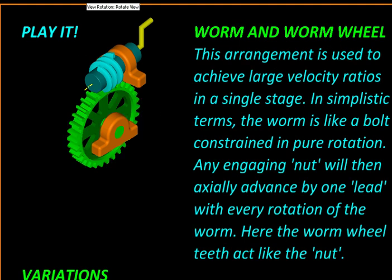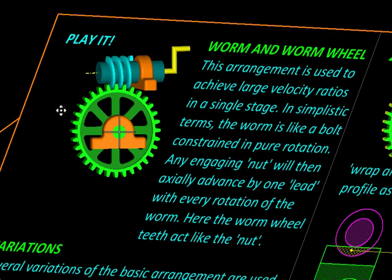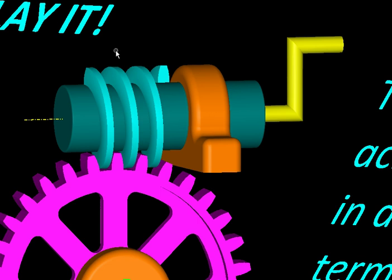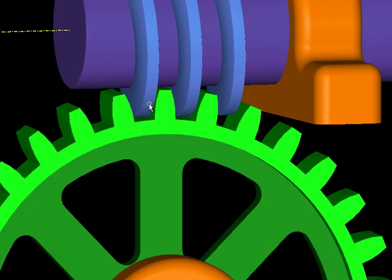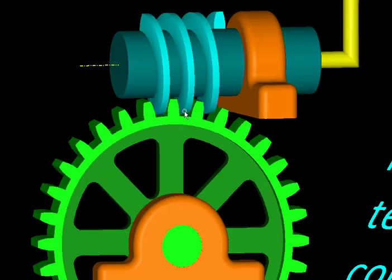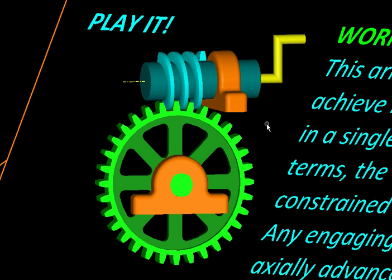It essentially consists of a simple spur gear shown in green and it is engaging with what you can view to be a large bolt. Of course it's not called a large bolt, it's called the worm. You can see this light blue thread of the worm is engaging with the teeth of the spur gear. The spur gear in this context is called the worm wheel.